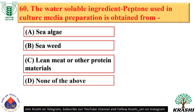Question number 60. The water-soluble ingredient peptone used in culture media preparation is obtained from lean meat or other protein materials. Peptone is a partially digested protein used in culture media.